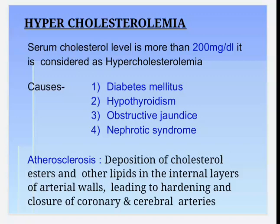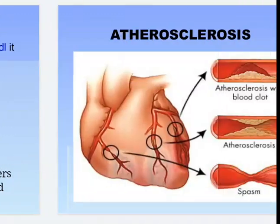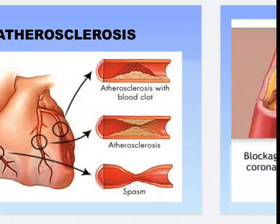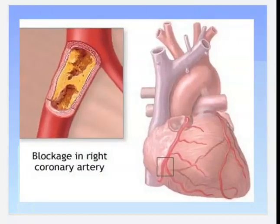Another condition is atherosclerosis, in which deposition of cholesterol esters and other lipids in the inner layers of arterial walls leads to hardening and closure of coronary or cerebral arteries. Looking at the images: in the first, there is a blood clot in the arterial walls; in the second, there is narrowing of blood vessels; and in the third, there is blockage of blood vessels or arteries, known as spasm. This is the diagrammatic representation of blockage in the right coronary artery.